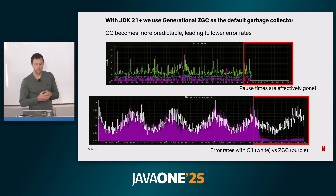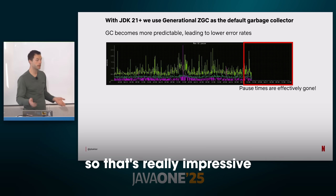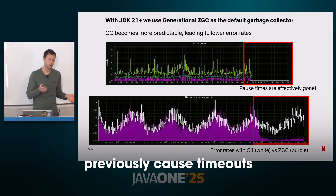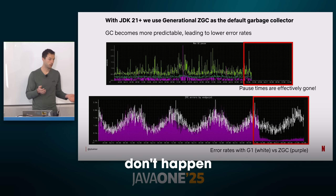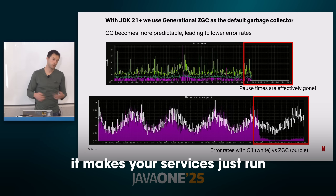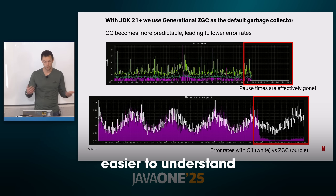When JDK 21 came out, they upgraded to Generational ZGC, which directly reduced error rates. They went from more than a second pause times to zero. Those garbage collection events would previously cause timeouts — with Netflix's aggressively tuned services, a GC pause over a second causes every incoming call to time out and retry, creating more load, more failures, more chaos. But with GenZGC, it reduces all that retry behavior, making services run more consistently, easier to operate and understand.